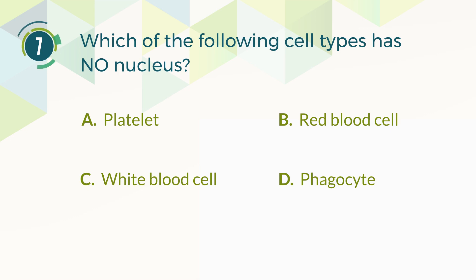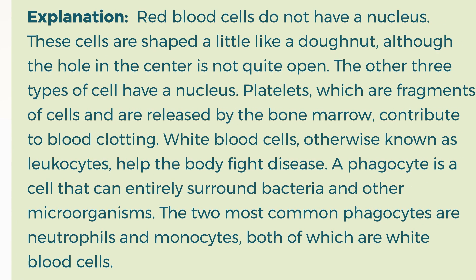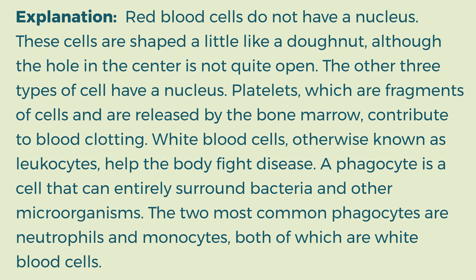The correct answer is B. Red blood cell. Explanation: Red blood cells do not have a nucleus. These cells are shaped a little like a donut, although the hole in the center is not quite open. The other three types of cell have a nucleus. Platelets, which are fragments of cells released by the bone marrow, contribute to blood clotting. White blood cells, otherwise known as leukocytes, help the body fight disease. A phagocyte is a cell that can entirely surround bacteria and other microorganisms. The two most common phagocytes are neutrophils and monocytes, both of which are white blood cells.